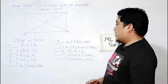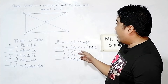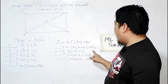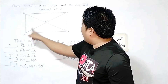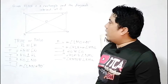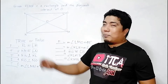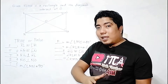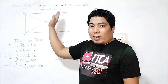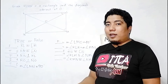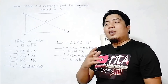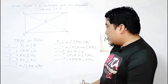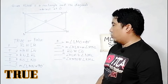Statement 7: Angle KLN is congruent to angle MNL. This is an example from our parallelogram discussion. Since a rectangle is a parallelogram, the diagonal cuts the quadrilateral into two congruent triangles, making angle KLN and angle MNL alternate interior angles. Therefore, this statement is true.